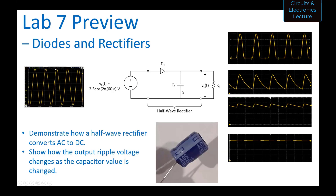Student: How can you tell which lead is negative and which is positive? Professor: Do you see this whitish band right here? That's a negative sign right where my mouse is. Some capacitors have a plus sign indicating the positive side, but all the capacitors in your kit have negative signs. The lead in line with that band is the negative lead. You'll notice this band is right next to a lead coming out of the bottom of the capacitor. If you have any questions about this, come ask me at office hours.